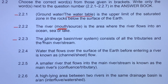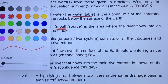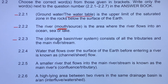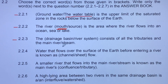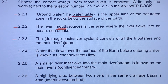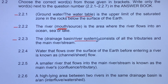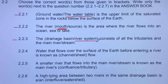Moving to 2.2.3: the drainage basin or river system consists of all tributaries and the main river or stream. The correct answer is the river system. This one is likely to confuse most students. The sentence stresses all tributaries and the main river — when you talk about all tributaries and the main river together, that is a river system.